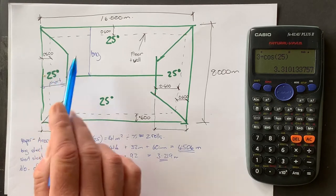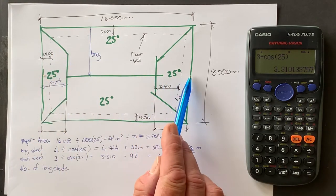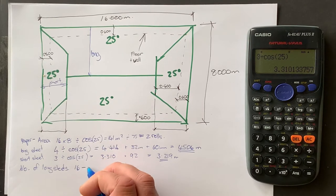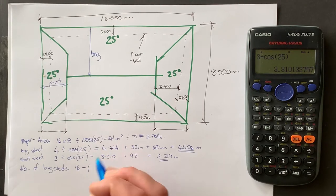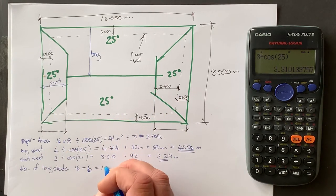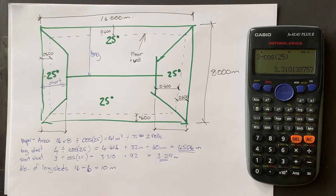So if we see that this is 16 and we know we've got three meters here and three meters here. So we say 16 minus, so three and three is six. So six equals 10 meters.